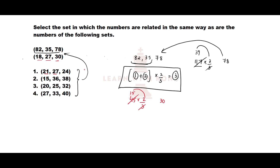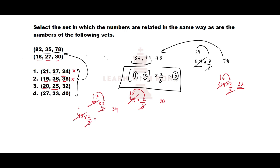Now let us check the options. For 21 and 27: 21 plus 27 is 48, and 48 times 2/3 is 32, but they have given 24 — not our option. For 15 and 26: sum is 41... 15 plus 26 is 41, times 2/3 gives roughly 27, but they have given 38 — not our option. For 20 and 25: sum is 45, times 2/3 is 30, but they have given 32 — not our option. For 27 and 33: sum is 60, times 2/3 is 40, which matches the third number. That is our answer.